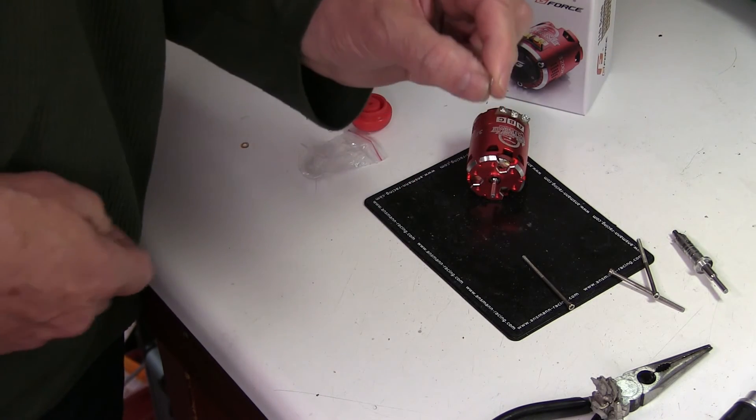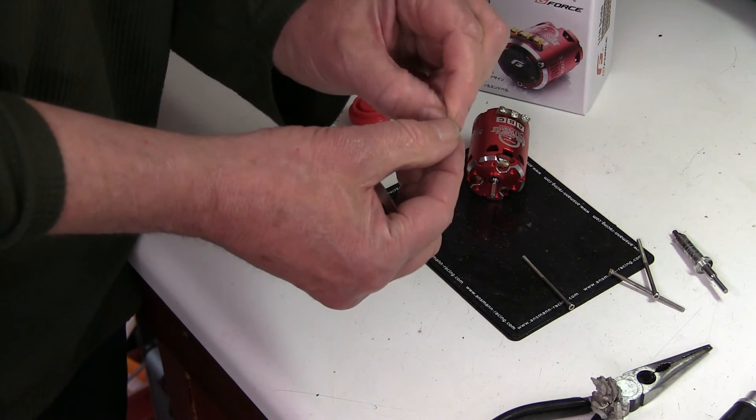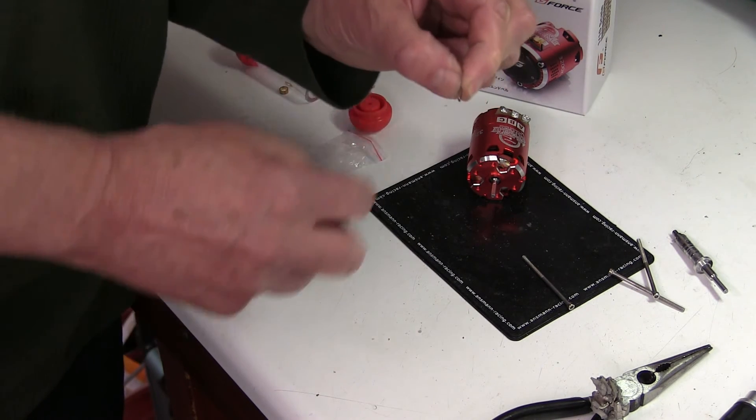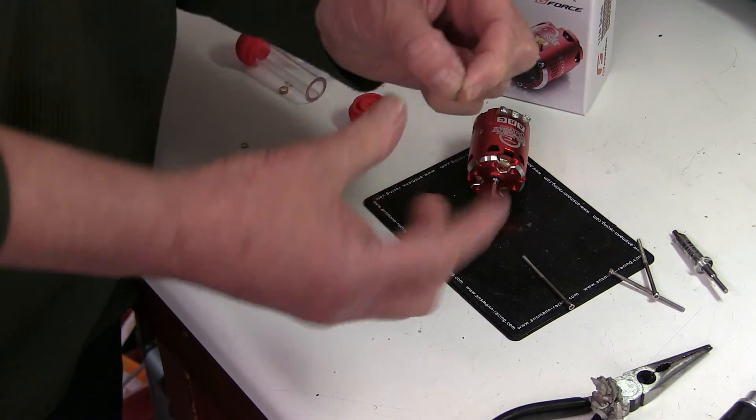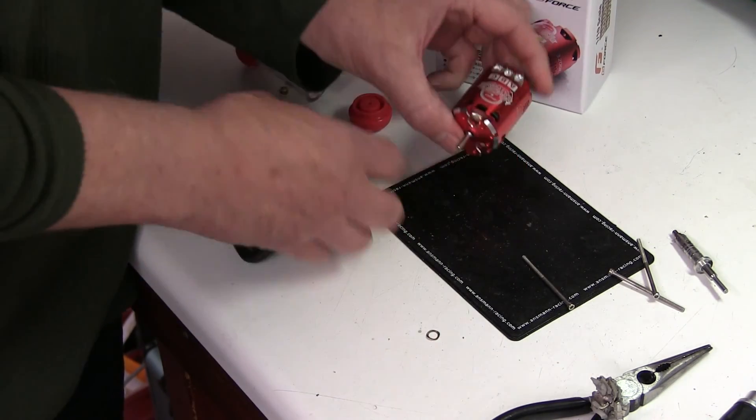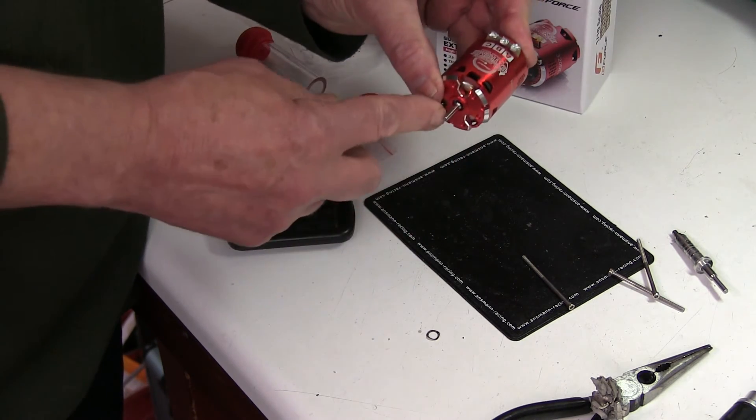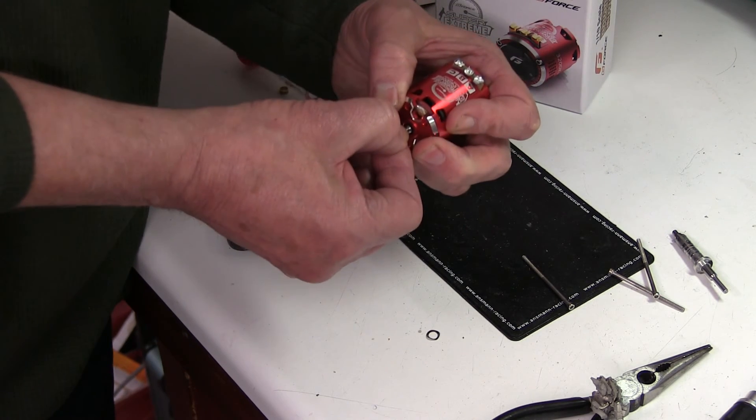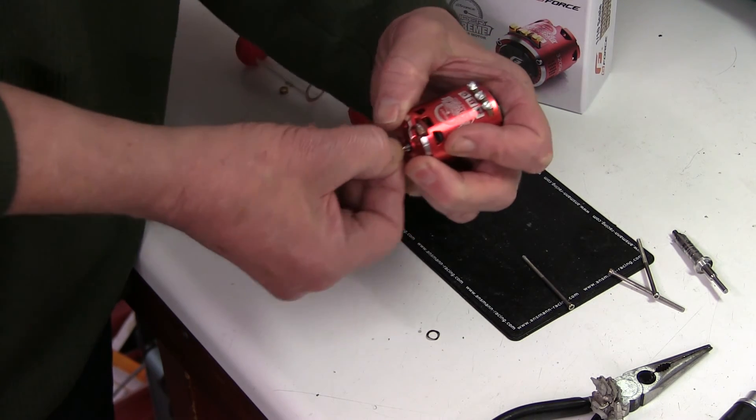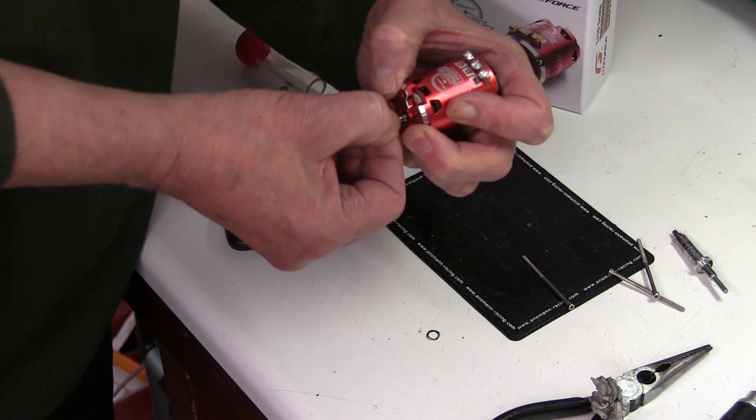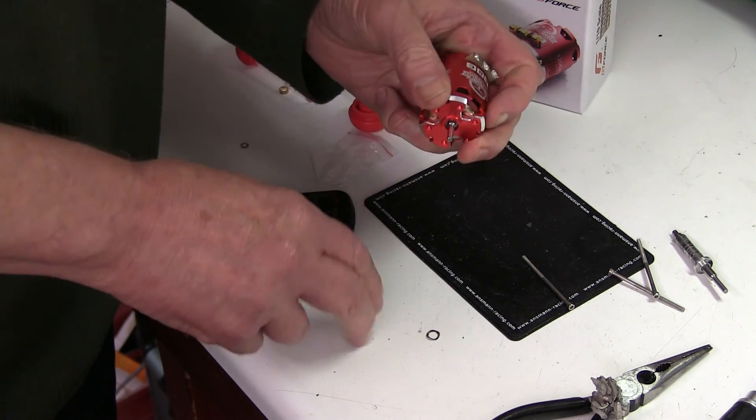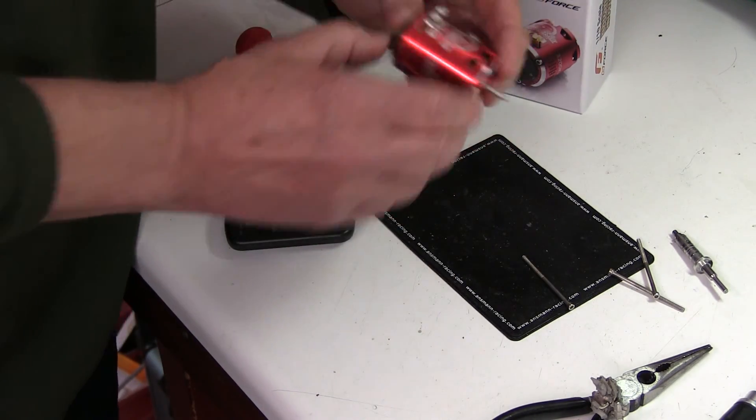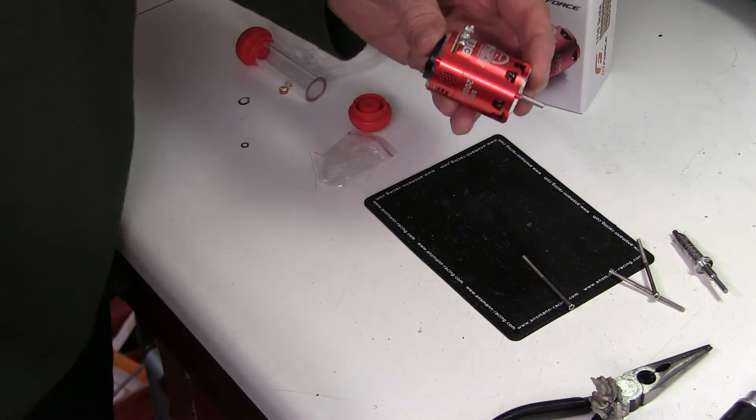These little crinkly washers that they supply in replacement rotors are good because they will take up the slack, but because they're crinkly, they will squash up as the motor gets hot and won't cause it to bind or push against the bearing, which would be really bad. So I put one of them in and it's just enough. There's no play there, but it's not too tight either. So I'll tighten that up and we do some tests.